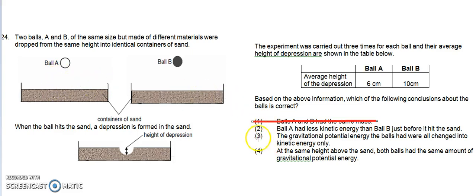Option 2 is a possible answer, but let's check the other options. Option 3: The gravitational potential energy the balls had were all changed into kinetic energy only. This is not true because when the ball drops, there is sound energy as well. There are other forms of energy that are converted, so option 3 is out.